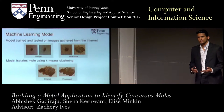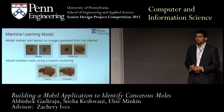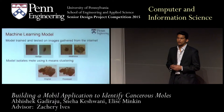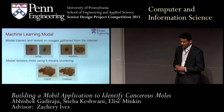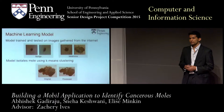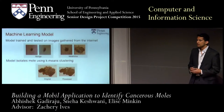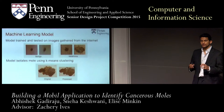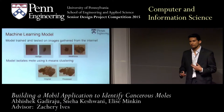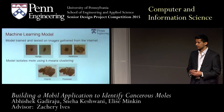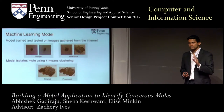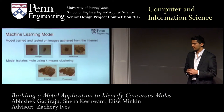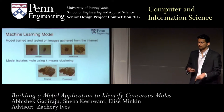Our machine learning model is trained on images pulled from the internet — about 100 images each of benign moles and melanoma, totaling 200 training images. Before extracting features, we standardized and pre-processed the images. The main step was isolating the region containing the mole through foreground-background analysis using k-means clustering, which allowed us to detect the general outline of the mole and eliminate most of the surrounding skin area by bounding a box around the mole.